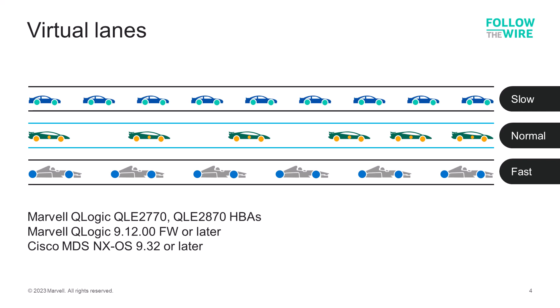Marvell and Cisco now support virtual lane technology, which enables SAN traffic to be segmented into dedicated lanes for slow, normal, and fast traffic at the host port. This allows for segmentation of slower traffic from higher priority traffic. Traffic can be steered on each virtual lane, and each lane can carry a different storage protocol or a different session within the same protocol.